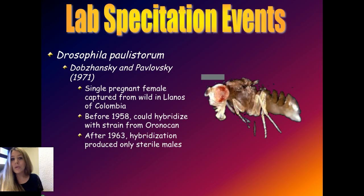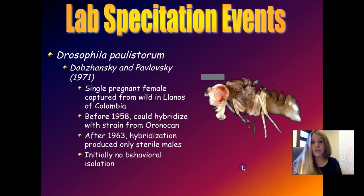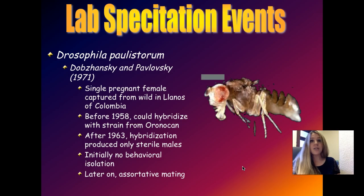And so by 1963, when you hybridized individuals from these two cages, they would only produce sterile males. So those males couldn't have babies. And so initially there was nothing keeping these guys from breeding behaviorally. But after a while, these guys started undergoing assortative mating where they preferred to mate with individuals from their own cage instead of individuals from the other cage. And so eventually, these guys are separate species because they could not produce fertile males together.